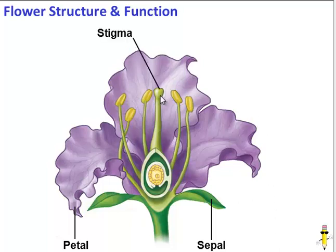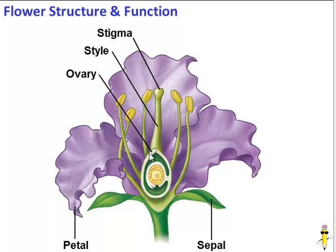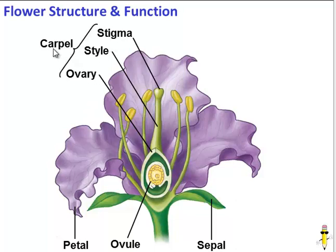Then we have a sticky structure called the stigma. The stigma's job is to capture pollen. The stigma is supported by a long structure called the style, and that connects to the plant's ovary. Within the ovary are smaller compartments called ovules, and within each ovule an egg cell develops. This whole group of structures is known as the carpel, and this is the female part of the flower.